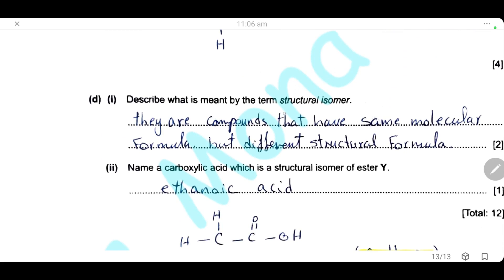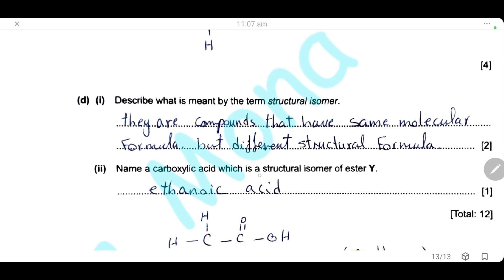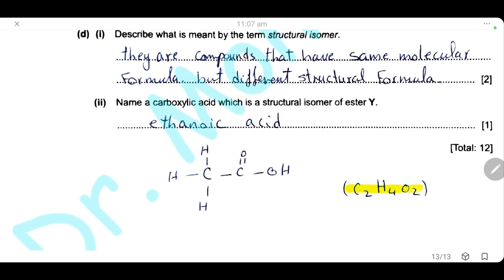Structural isomers are compounds that have the same molecular formula but different structural formulas. The carboxylic acid that is a structural isomer of methyl methanoate (C₂H₄O₂) is ethanoic acid — it has two carbons (CH₃ and the carboxyl group COOH), giving the same molecular formula C₂H₄O₂ but a different structure.